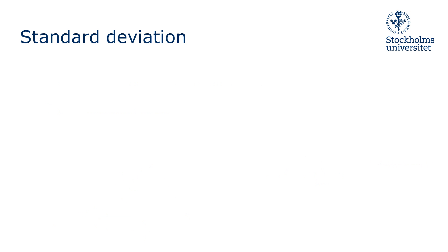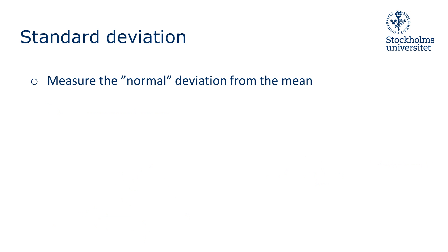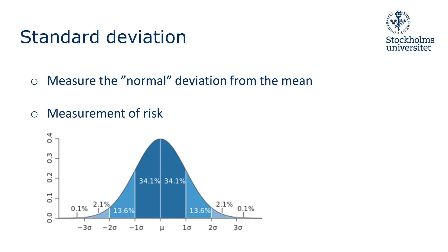The standard deviation is a measure of the width of the normal distribution curve and the normal deviation from the mean. In Finance, this is a measure of risk, since it tells us how uncertain our expected return is. A high standard deviation means higher risk, since the return deviates more from the mean. A low standard deviation instead means lower risk, since the return deviates less from the mean, making our expected return a better estimate.